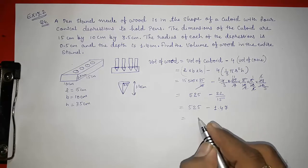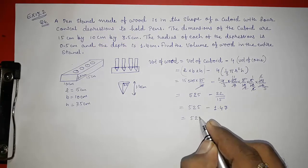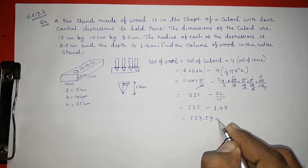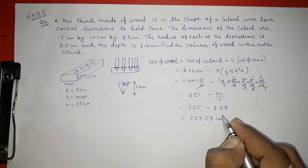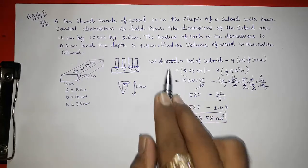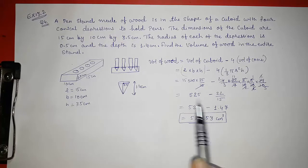Now subtracting this, we will get 523.53, approximately you can write out, centimeter cube. So this way we can find out the volume of the wood used in the given sum.